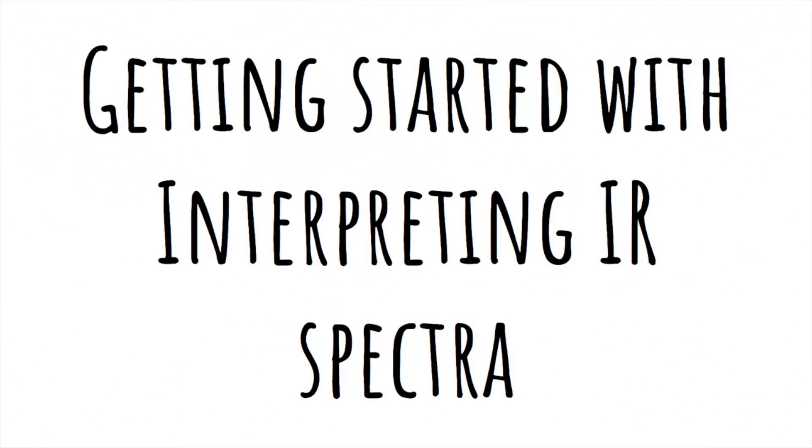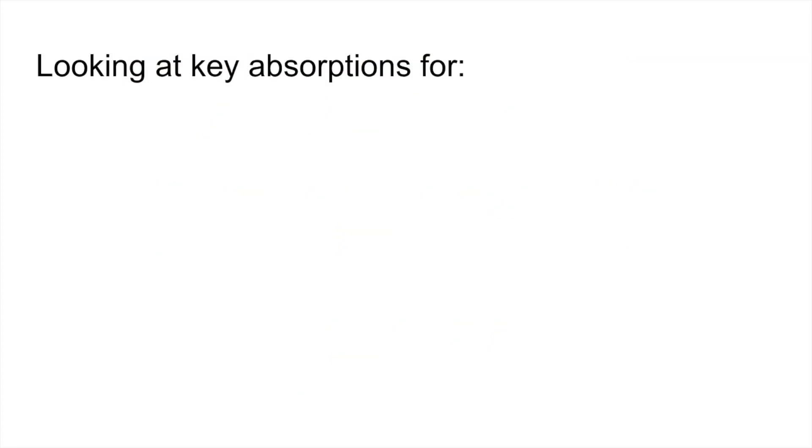In this video I'm going to take a look at how to get started with interpreting infrared spectra. Because when you first start with infrared it can be quite daunting knowing which absorptions to focus on and which ones to ignore. So what we're going to do is look at the key absorptions for alcohols, carboxylic acids and carbonyl compounds, so that's aldehydes and ketones.